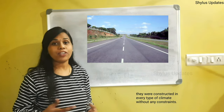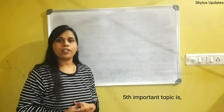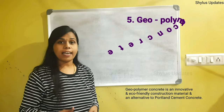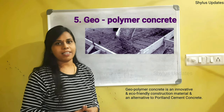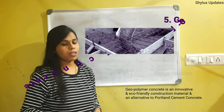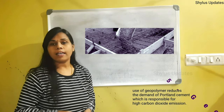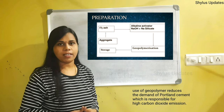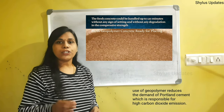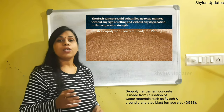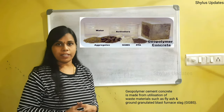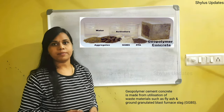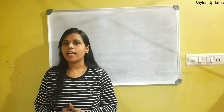The fifth important topic is geopolymer concrete. Geopolymer concrete is an innovative and eco-friendly construction material and an alternative to Portland cement concrete. Use of geopolymer reduces the demand for Portland cement, which is responsible for high CO2 (carbon dioxide) emissions. Geopolymer cement concrete is made from utilization of waste materials such as fly ash and ground granulated blast furnace slag (GGBS).